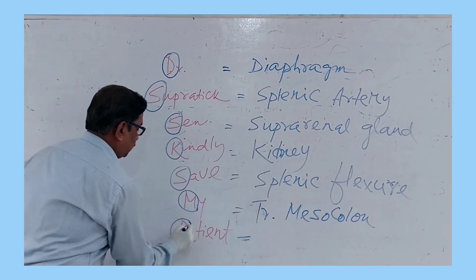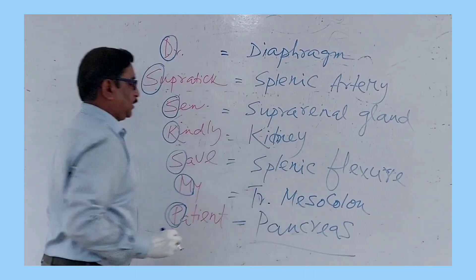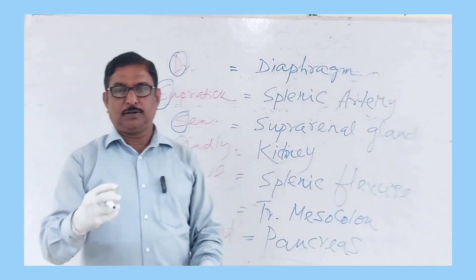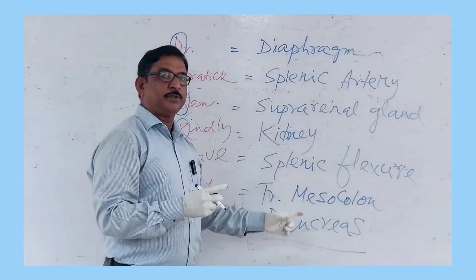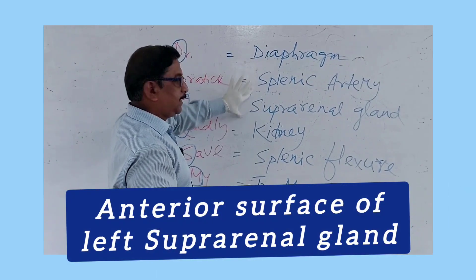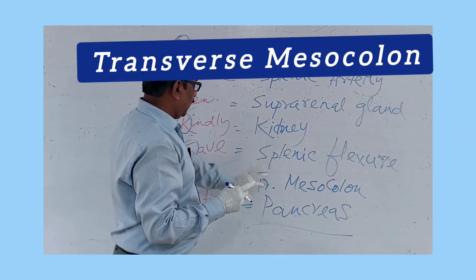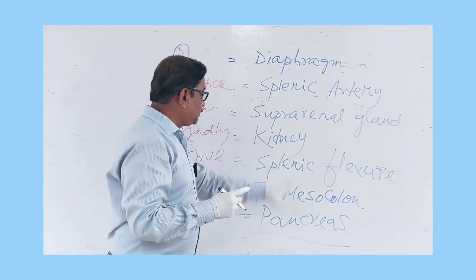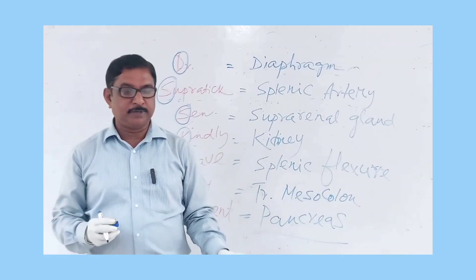The last letter, P, stands for pancreas. The pancreas has four parts: head, neck, body, and tail. Since we are on the left side, it is the anterior surface of the body of the pancreas. To summarize: left crus of diaphragm, tortuous splenic artery, anterior surface of left suprarenal gland, anterior surface of left kidney, splenic flexure or left colic flexure, transverse mesocolon, and anterior surface of the body of the pancreas. All these structures are separated from the stomach by the lesser sac. However, the spleen may form part of the stomach bed but is separated by the greater sac, not the lesser sac.